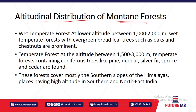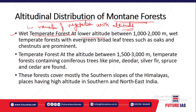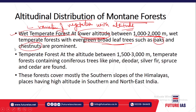Now let's understand the altitudinal distribution of mountain forest — how vegetation varies with altitude. At the lower altitude, between 1000 to 2000 meters, you have wet temperate forests. Here there is sufficient rainfall, so you find evergreen broadleaf trees because of sufficient moisture and temperature.